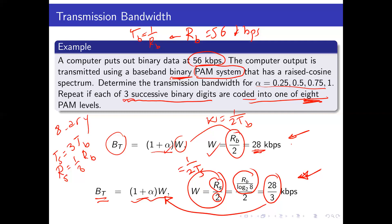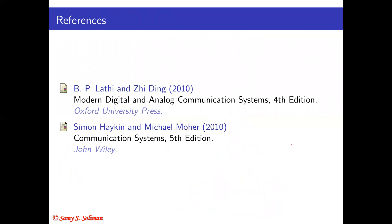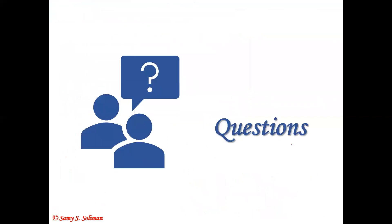This concludes our discussion on inter-symbol interference and the design of raised cosine pulses, which fulfill the reduced Nyquist criteria to overcome the disadvantages of the minimum bandwidth pulse — sharp transition and slow decay. The raised cosine pulse has a gradual roll-off and a decay proportional to 1/t³, making it much more practical for real communication systems.